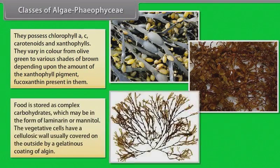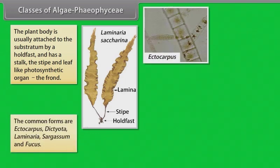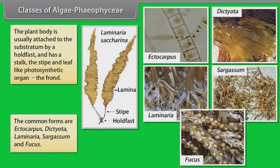Food is stored as complex carbohydrates which may be in the form of laminarin or mannitol. The vegetative cells have a cellulosic wall usually covered on the outside by a gelatinous coating of algin. The plant body is usually attached to the substratum by a holdfast and has a stalk, the stipe, and leaf-like photosynthetic organ, the frond. The common forms are ectocarpus, dictyota, laminaria, sargassum and fucus.